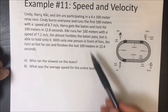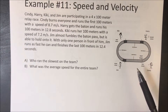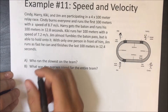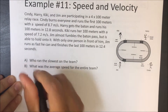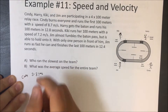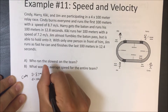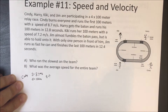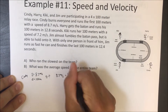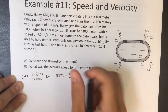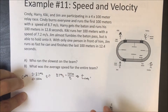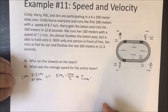Since they're all running 100 meters, we just find how long it took each person. For Cindy: speed equals distance over time, so 8.7 meters per second equals 100 meters divided by time. Solving for time, Cindy's time is 11.49 seconds.